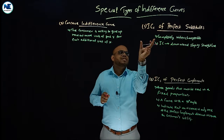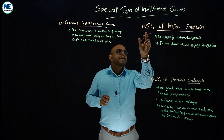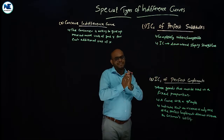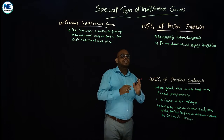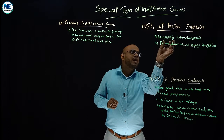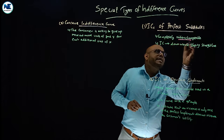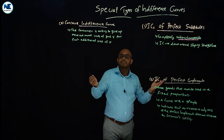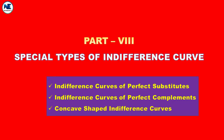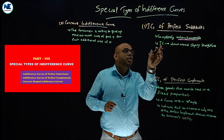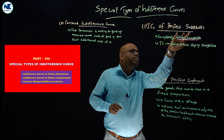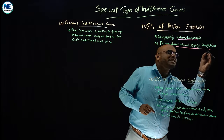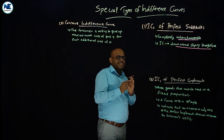The first special type is indifference curves of perfect substitutes. Perfect substitutes are those goods that are completely interchangeable — for example, tea and coffee. The indifference curve for perfect substitutes is a downward sloping straight line. That is the key word.